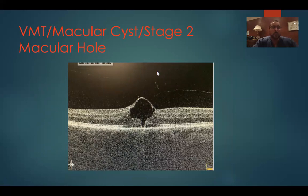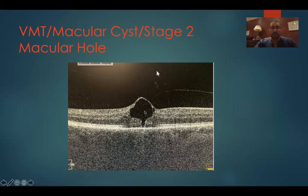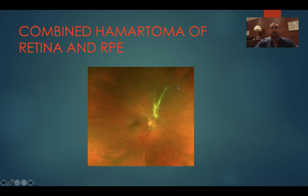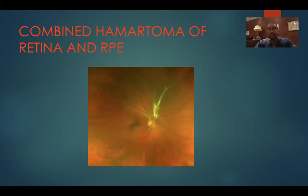Another interesting case is combined vitromacular traction with a lamellar macular hole. You can clearly see the VMT as well as a partial thickness hole. This is more of a macular cyst technically speaking, because you can see the inner retinal layers are preserved and have actually formed a cyst — somewhere between that and a lamellar macular hole. Another case shows vitromacular traction with a macular cyst and also a stage two macular hole. This is typically through and through, and without intervention could progress to a stage three or four macular hole, but we're catching it early. Last but not least, a 16-year-old who came in asymptomatically with a combined hematoma of the retina and retinal pigment epithelium — not in the macula, not requiring surgery. This can be associated with neurofibromatosis type 2, but in this case it was not, so it was observed.